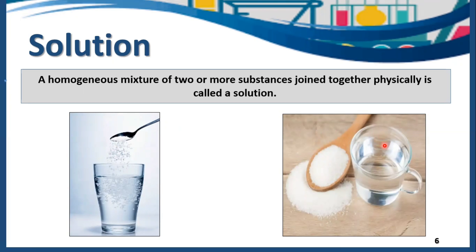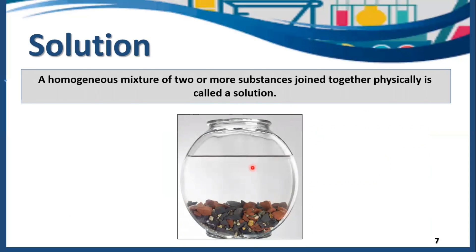So whenever, by mixing the solute and solvent, if we get a homogeneous, uniform mixture in which we can't see the particles of solute, that mixture is called a solution. Have a look at this example. Now this is the solvent — water is present here in the larger quantity. These are pebbles and they are acting as solute here because they are present in smaller quantity.